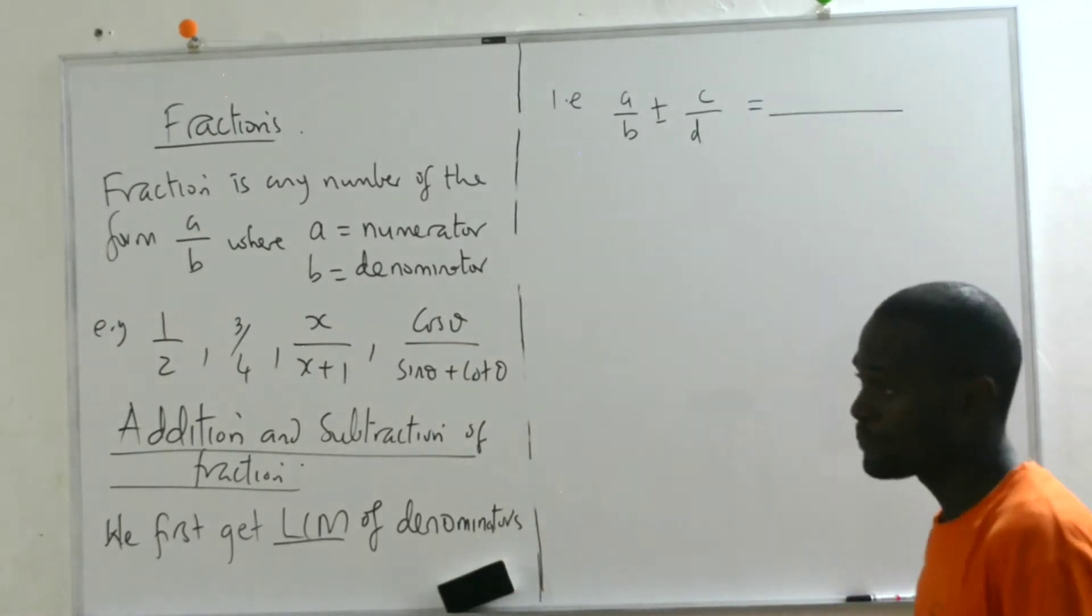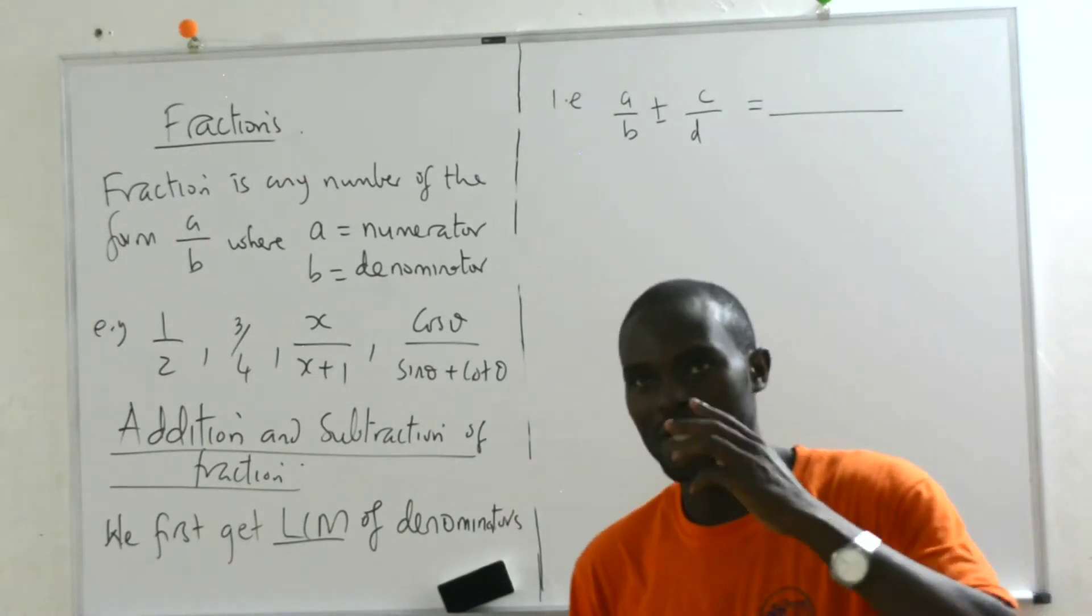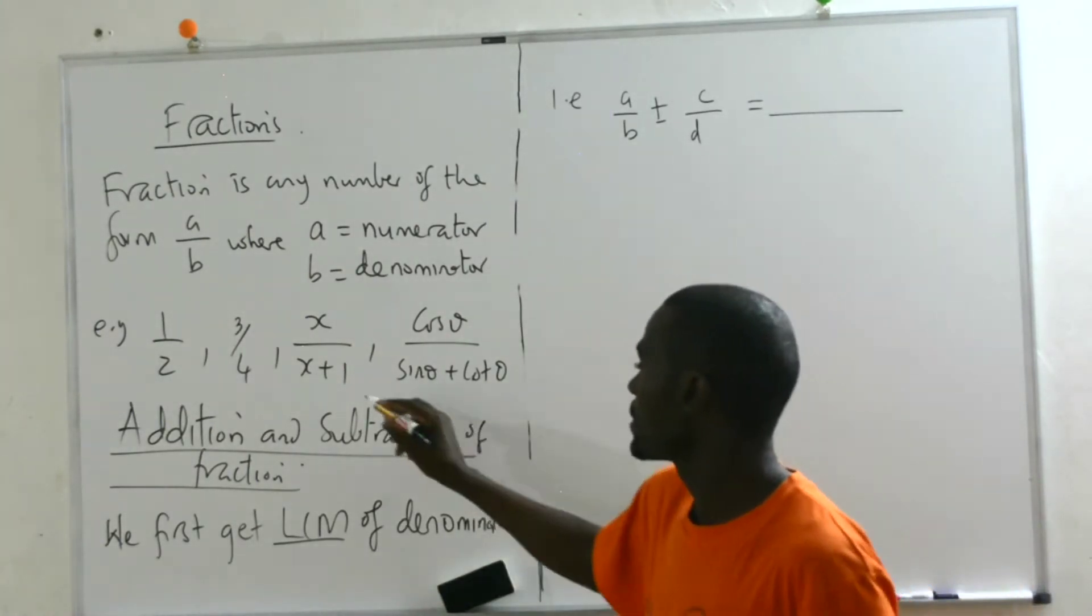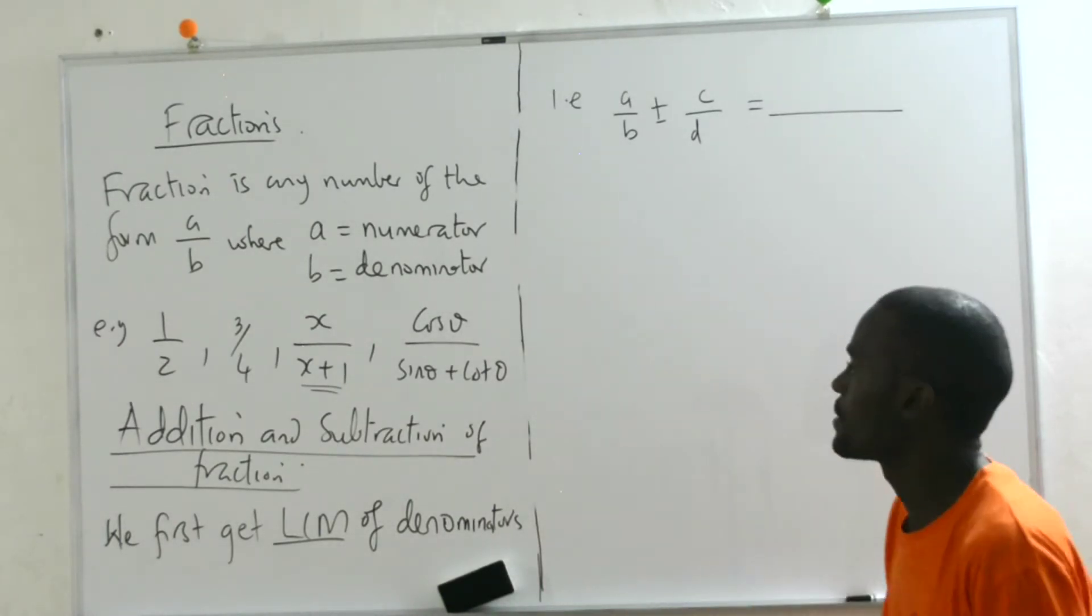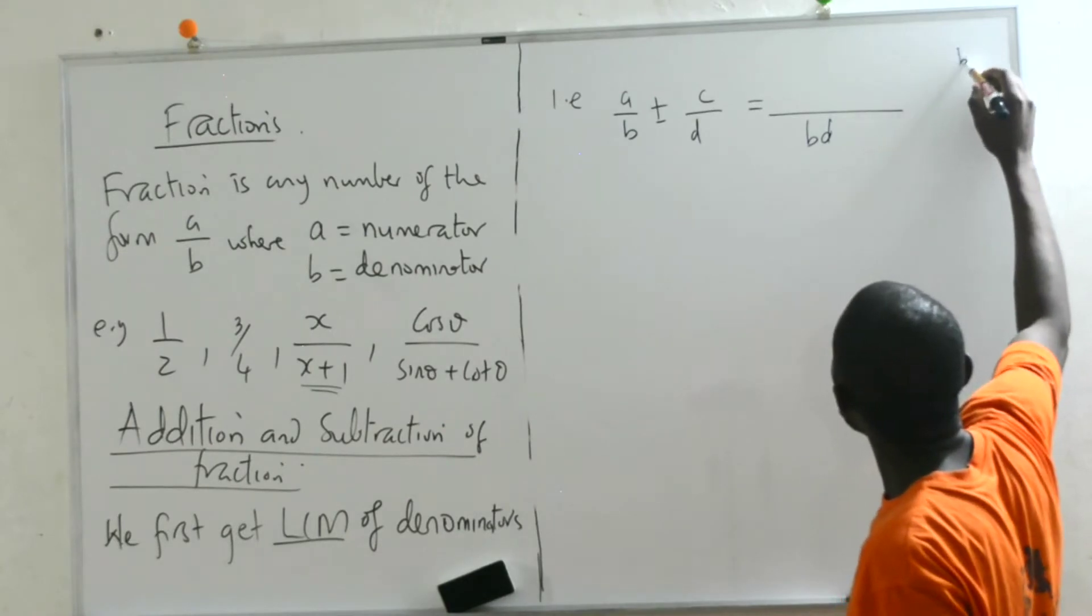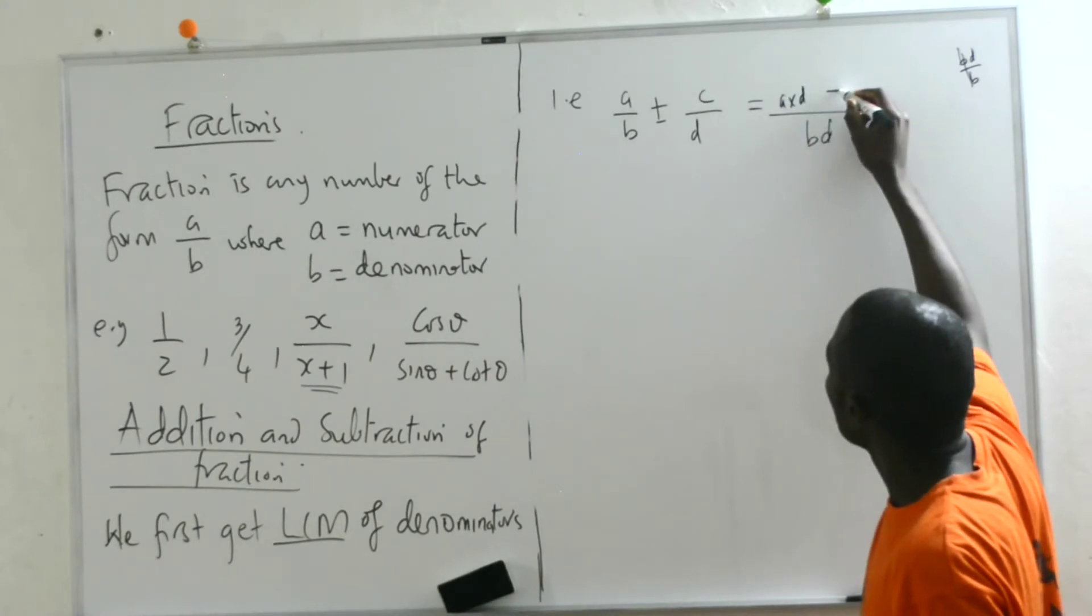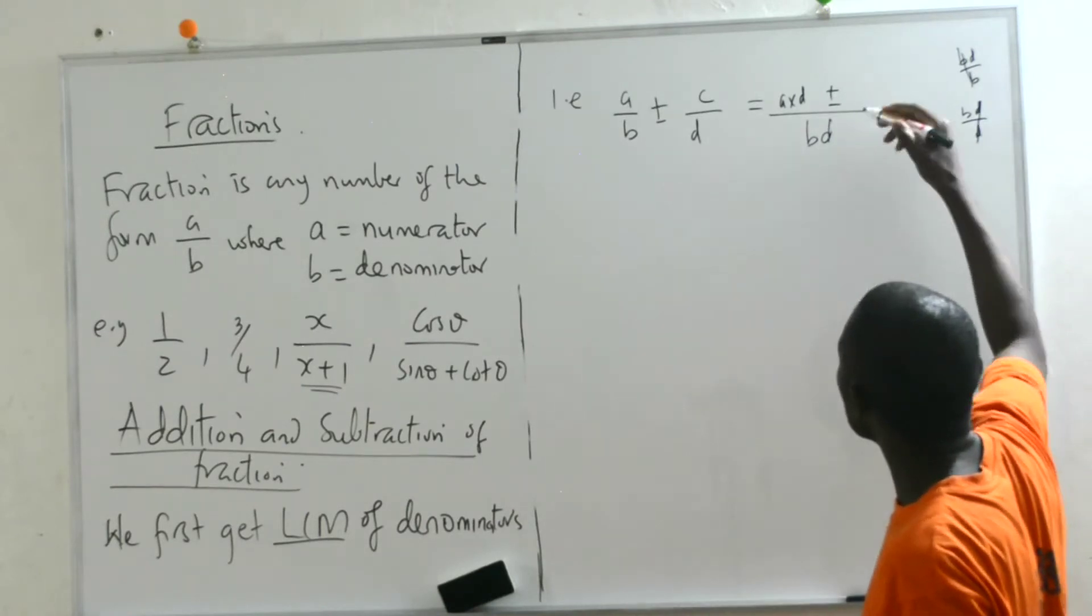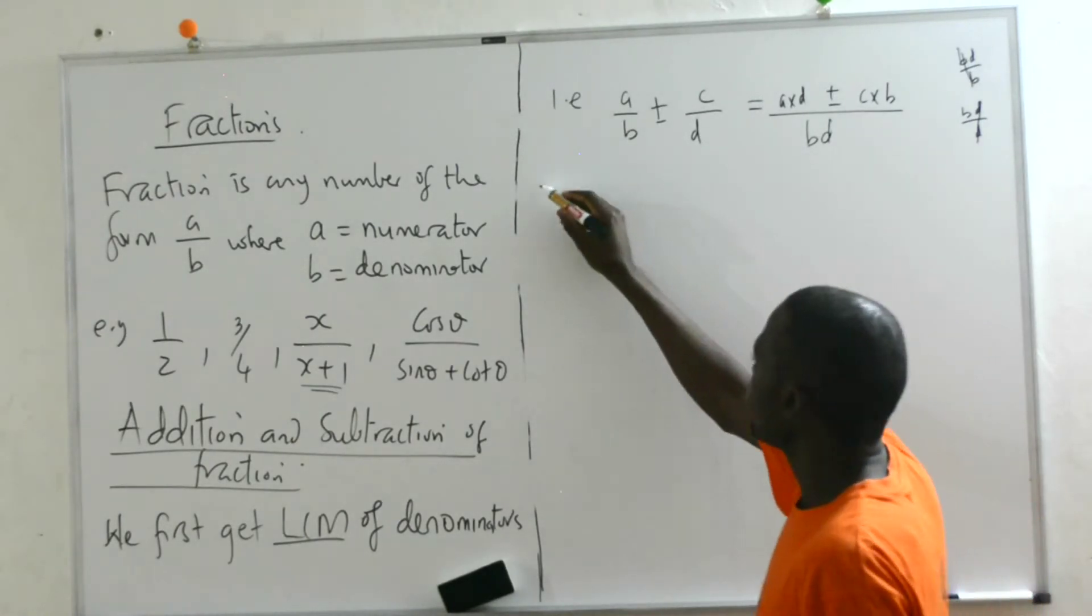So to do this, we first get LCM - lowest common multiple of denominators. If I have fractions of this type, it could be adding or subtracting, so I'm taking plus or minus. What do we do? LCM of numbers like 2, 3, 4, 6 you know how to do that. If we want to get LCM of unknowns, we take their product.